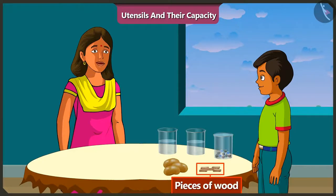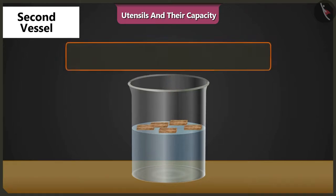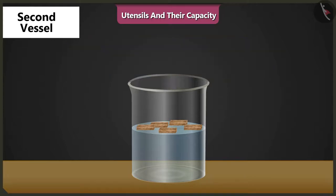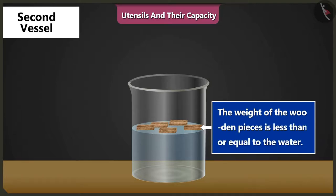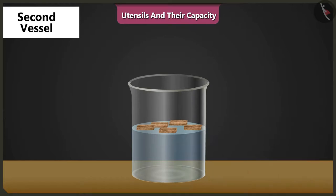Now put these pieces of wood in another vessel half filled with water. Why did the water not come up when we dropped in the wooden pieces? Because the weight of these pieces of wood is less than or equal to the weight of water in the vessel, so these pieces did not sink to the bottom. This is why the water did not come up.